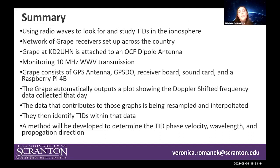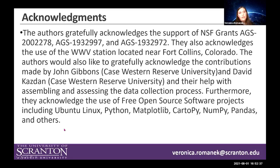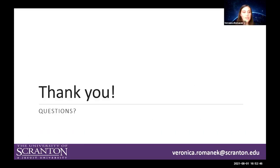In summary: using radio waves, we are looking for TIDs to study them. We currently have a network of GRAPE receivers set up across the country. The GRAPE at KD2UHN is attached to an OCF dipole antenna and is actively monitoring the 10 MHz WWV transmission. The GRAPE consists of a GPS antenna, a GPS DO, a receiver board, a sound card, and a Raspberry Pi 4B. The GRAPE automatically outputs a plot showing the Doppler-shifted frequency data collected each day. The data is being resampled and interpolated, then used to identify TIDs, and a method will be developed to determine TID phase velocity, wavelength, and propagation direction. Thank you, and I'm happy to answer any questions.